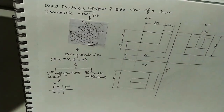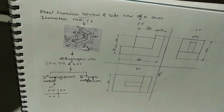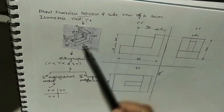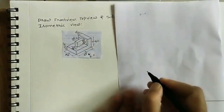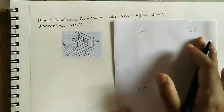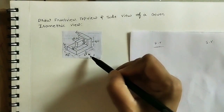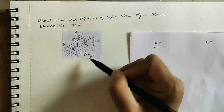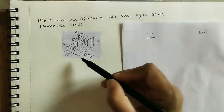First, do the front view of this object. Front view means wherever the arrow is pointing, that is the front view. Sometimes they give an arrow — wherever the arrow is, that is the front view of the object. Let us do the front view here. I am roughly planning: front view in this area, top view here, and side view in this portion. We will do all three views roughly by seeing this isometric view.